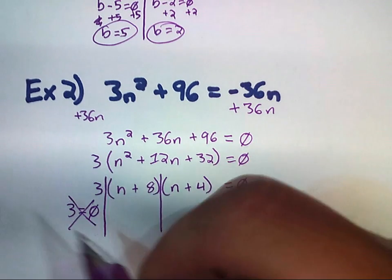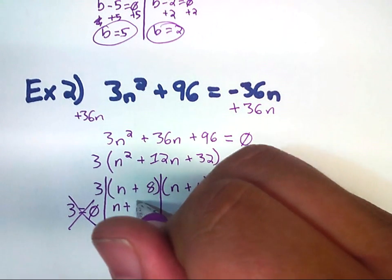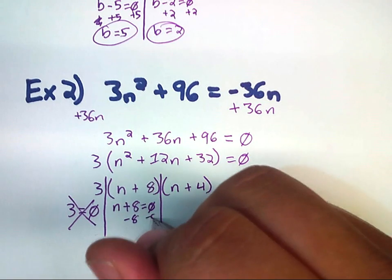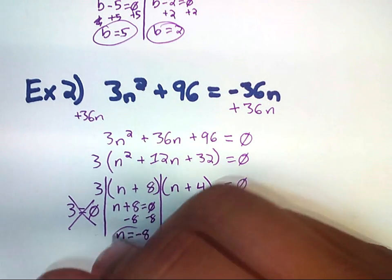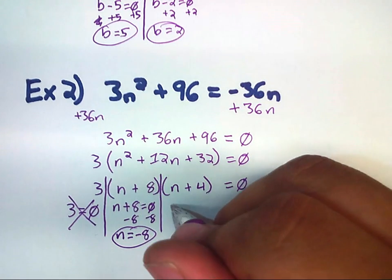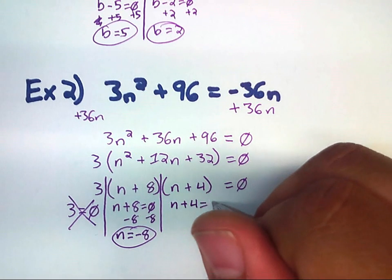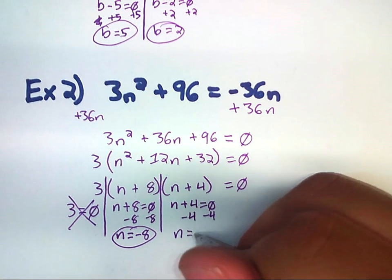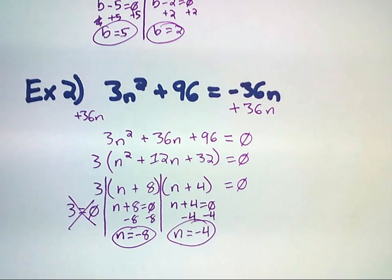However, these other two are going to work out to be roots. Here we go. Subtract 8 from both sides. So, one of the roots is n equals negative 8. And the other root, n plus 4 equals 0. We'll go ahead and subtract 4. And I get n equals negative 4. So, there's my two roots.